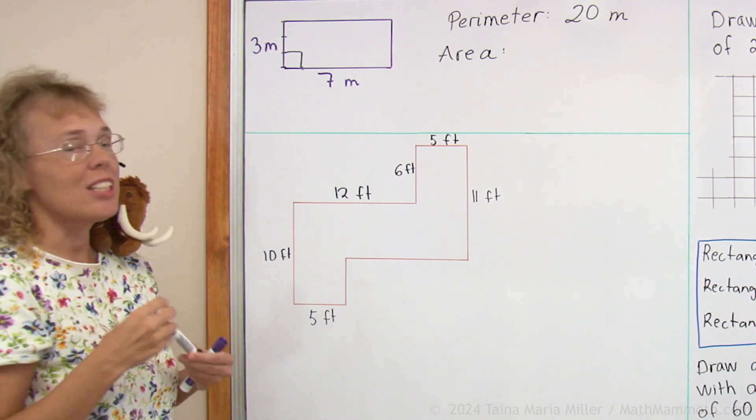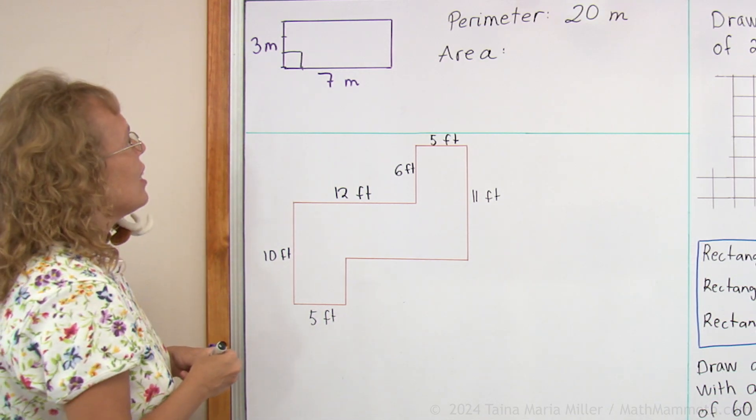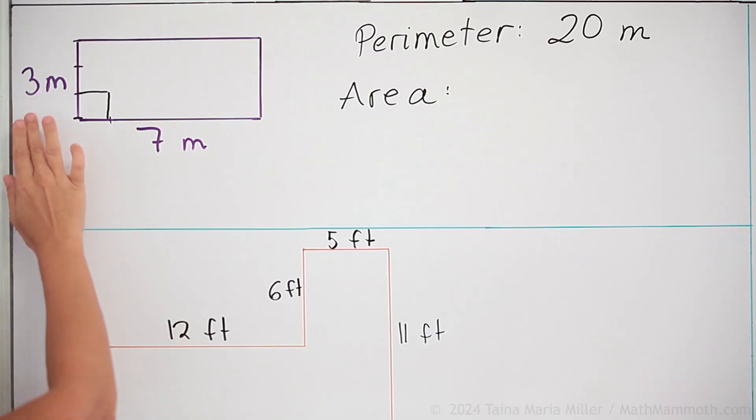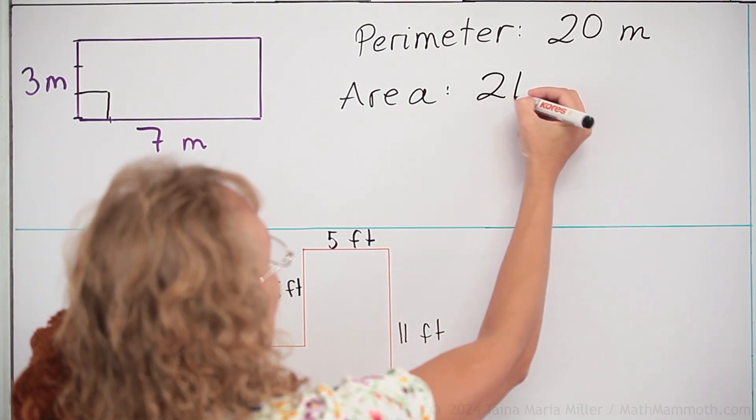In this case it will be measured in square meters. And we can use multiplication to find the area. It will be 3 times 7. There will be 21 squares inside it and they are square meters.